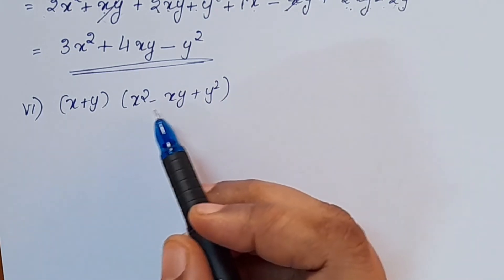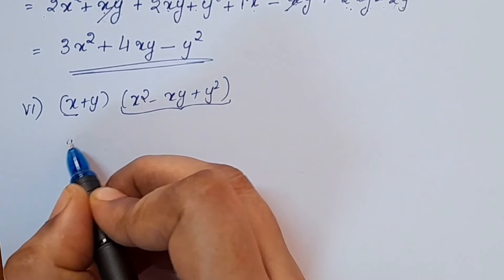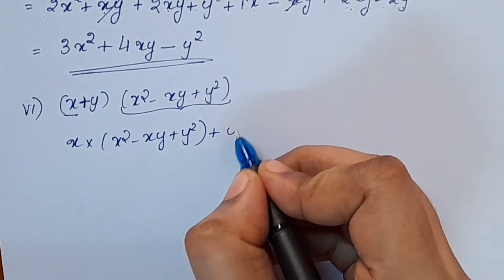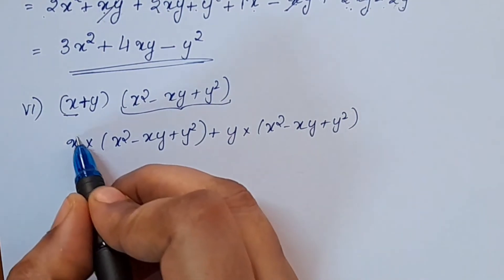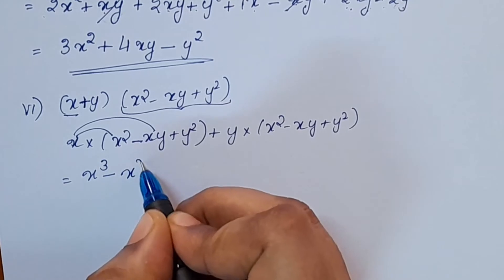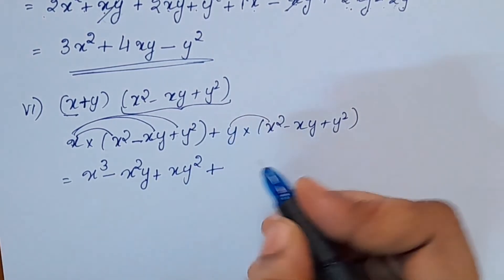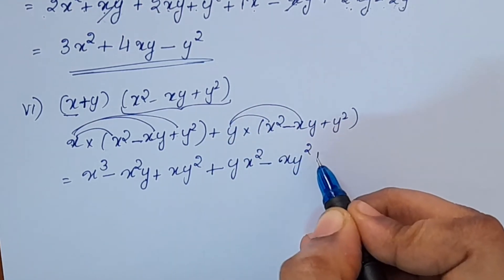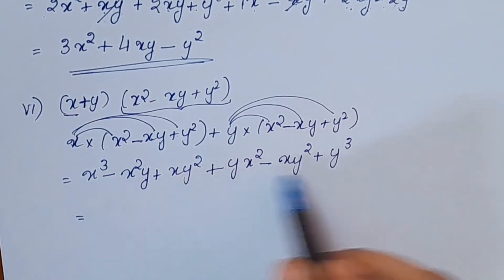This is a huge factor, so we will multiply the same way. This is 1x² plus 3x². We will multiply the same way into x² - xy + y². Distributing: x into x² is x³, minus x into xy is x²y, plus x into y² is xy², plus y into x² is x²y, minus y into xy is xy², plus y into y² is y³.